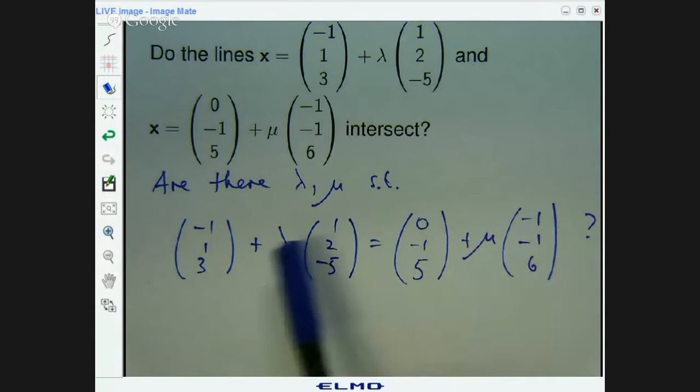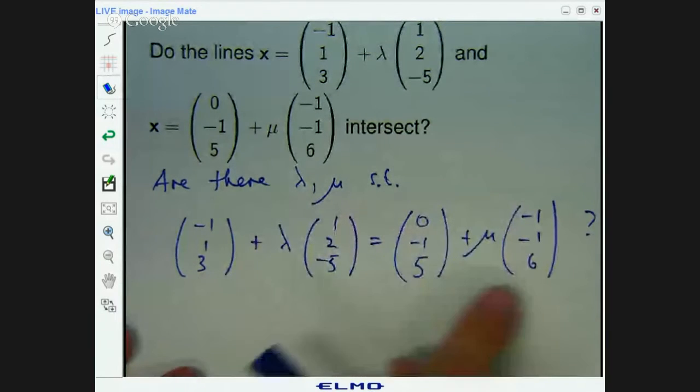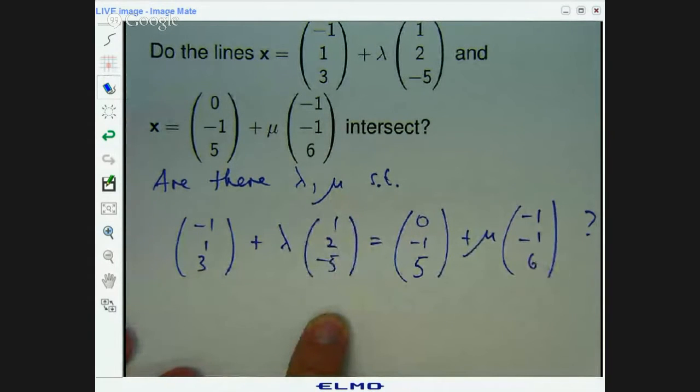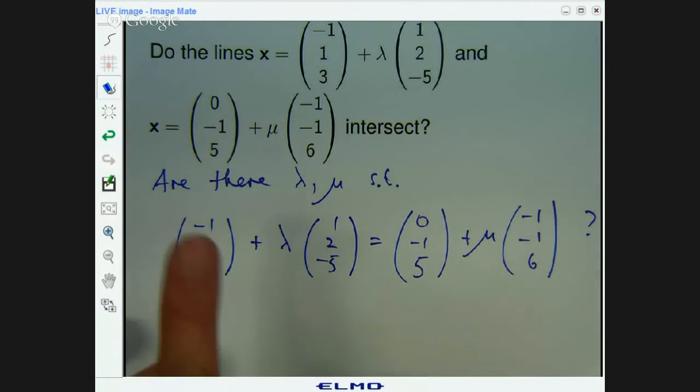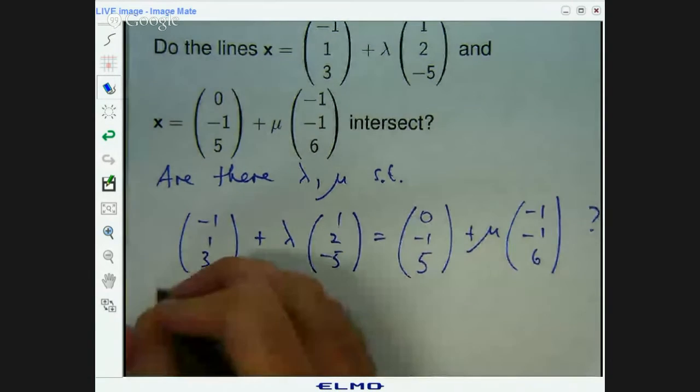Here we've got a classic vector equation. What we're going to do is write this as an augmented matrix, and the way I'm going to do it is through rearranging this. We've got all the lambdas and the mus on one side, and the constant vectors on the other side. I'm going to take this vector to this side and this to the other side.